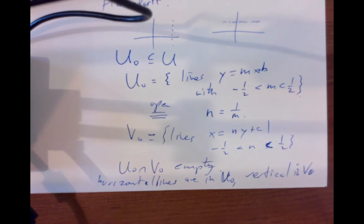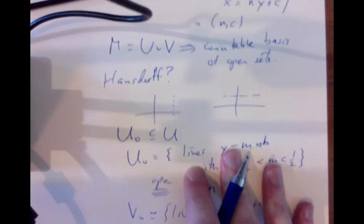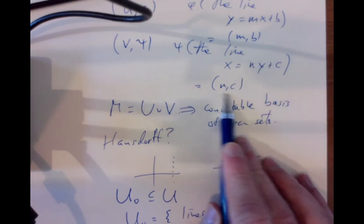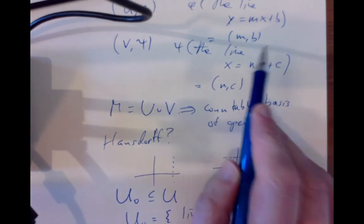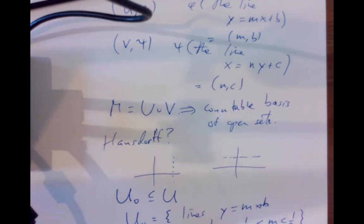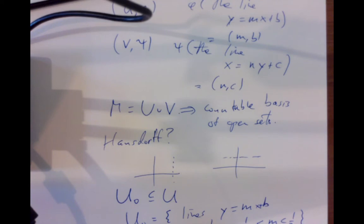You might wonder what manifold the space of lines is. It's a two-dimensional manifold because our charts take values in pairs of numbers — slope and intercept. It has to be some kind of surface. It turns out to be a famous surface — it may be a Möbius strip. The lecture notes at this point give numerous additional examples proving that various things are manifolds: the set of orthogonal matrices, the projective line, and projective space.